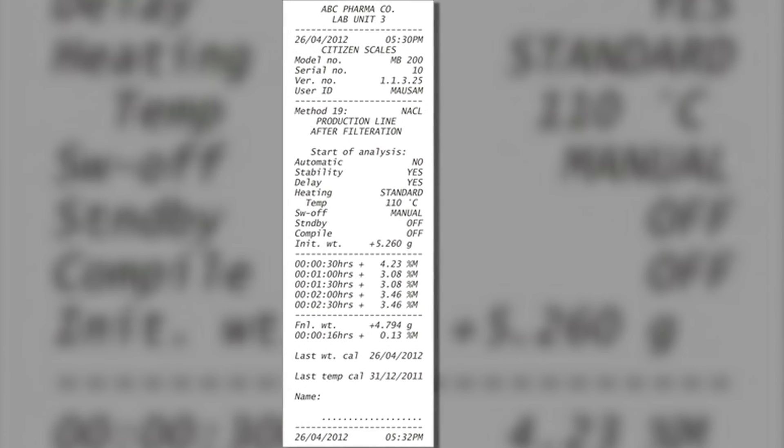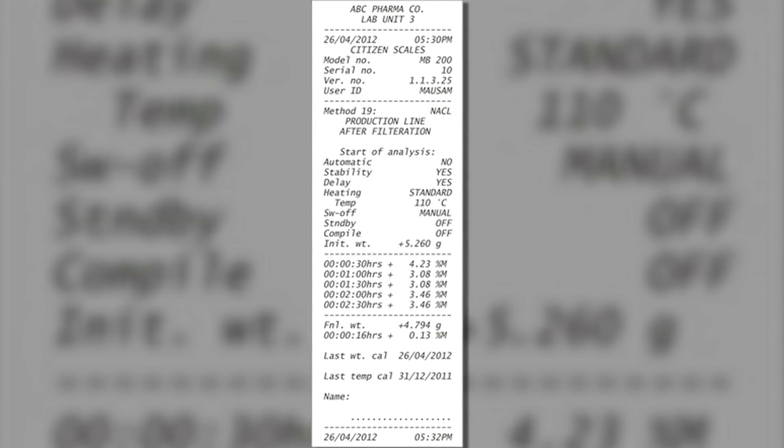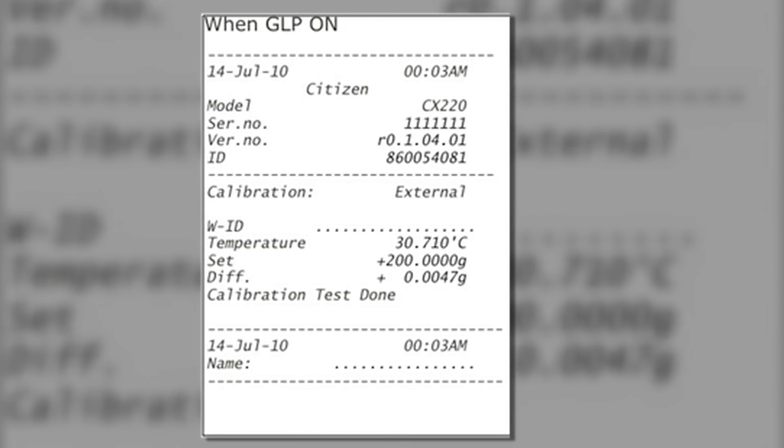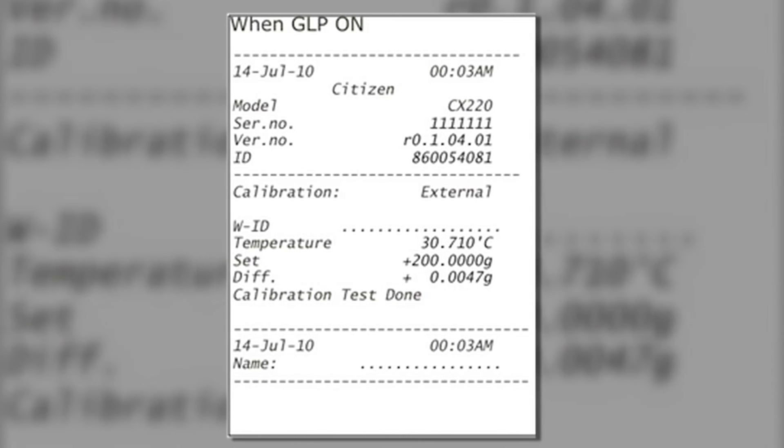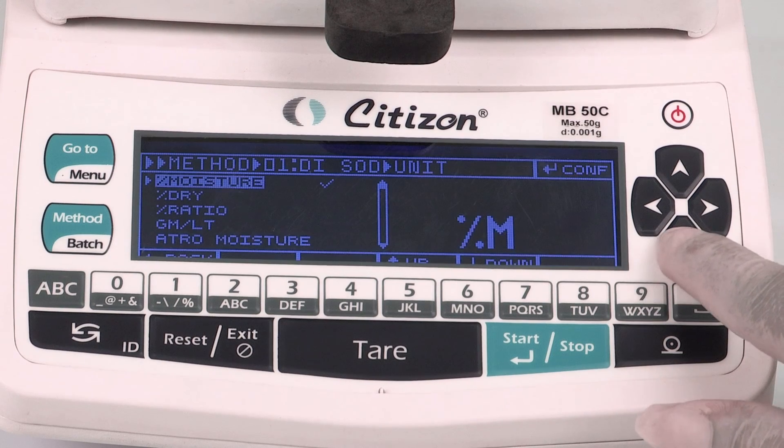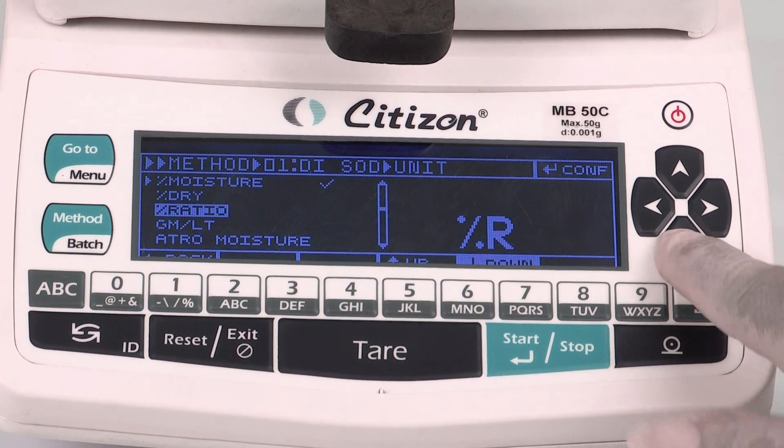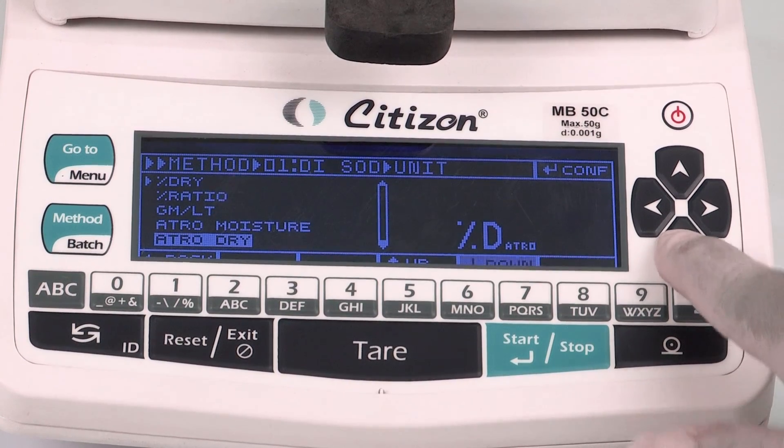The customizable print result allows getting the GLP compliant print results with the required names and in desired format. MB offers the option to view the results with different units, extending great flexibility and convenience.